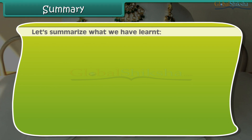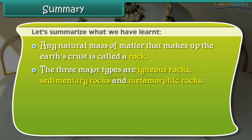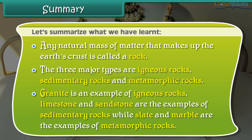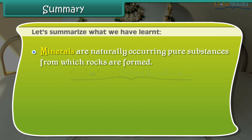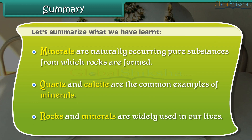Let us summarize what we have learned. Any natural mass of matter that makes up the earth's crust is called a rock. The three major types are igneous rocks, sedimentary rocks, and metamorphic rocks. Granite is an example of igneous rocks; limestone and sandstone are examples of sedimentary rocks; while slate and marble are examples of metamorphic rocks. Minerals are naturally occurring pure substances from which rocks are formed. Quartz and calcite are the common examples of minerals. Rocks and minerals are widely used in our lives.